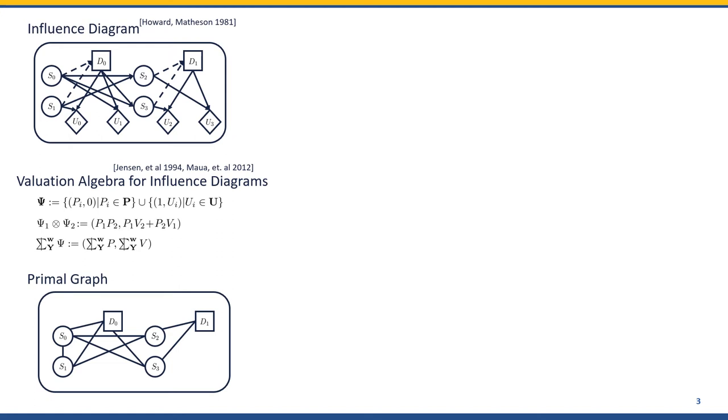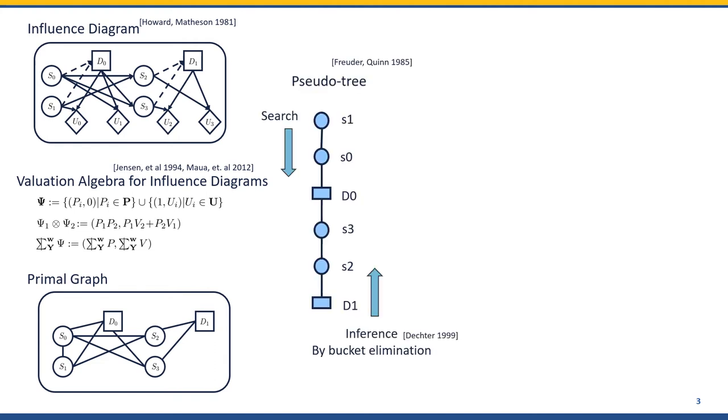To identify problem structure, we first generate the primal graph by converting the inference diagrams as an undirected graph of nodes associated with the variables. We introduce an edge if the variables appear in some function together. The sequential decisions constrain the order of computation. In this example, we make decision D0 after observing S0 and S1, and then we make decision D1 after further observing S2 and S3.